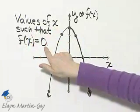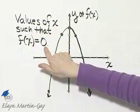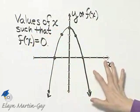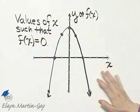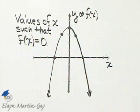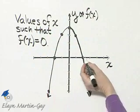So 0 is an f of x or y value. Where are all the ordered pairs whose y value is 0? They are all along the x-axis. So where along this graph does this graph cut the x-axis?